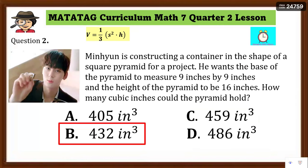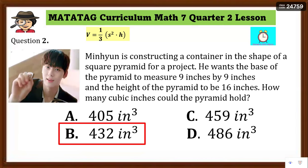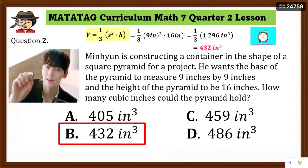Assessment number 2: Min Heung is constructing a container in the shape of a square pyramid for a project. He wants the base of the pyramid to measure 9 inches by 9 inches and the height to be 16 inches. How many cubic inches could the pyramid hold? Substitute: s = 9 inches, h = 16 inches. V = (9² × 16) / 3 = (81 × 16) / 3 = 1,296 / 3 = 432 cubic inches. The answer is letter B, 432 cubic inches.